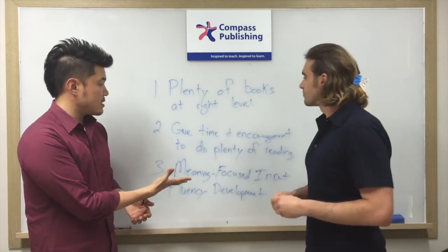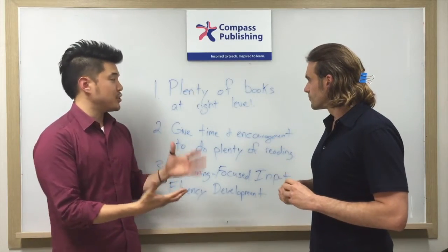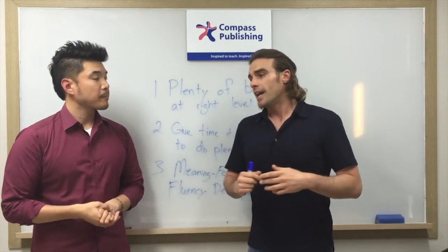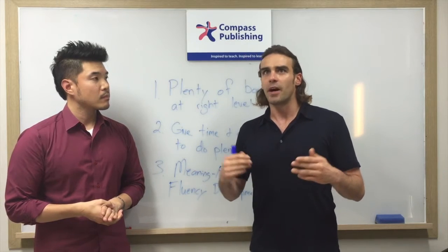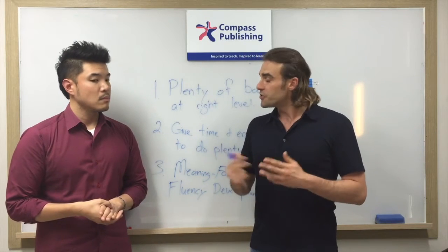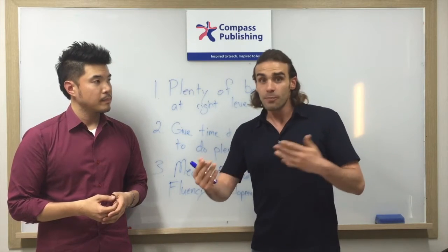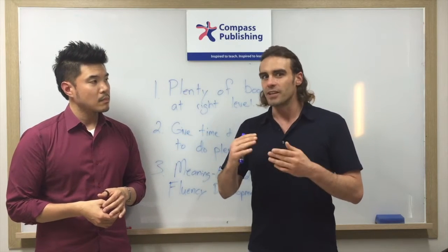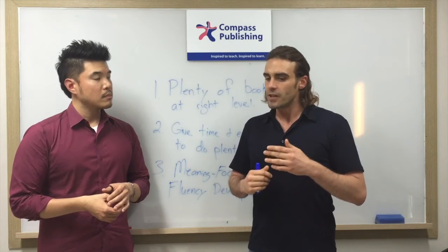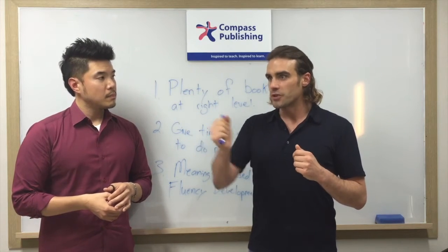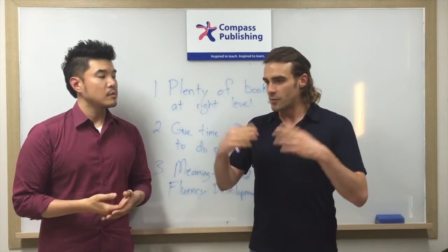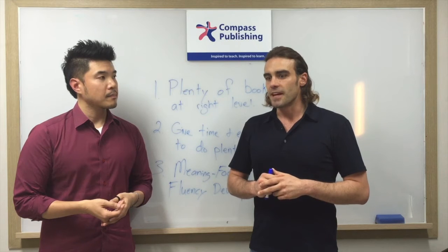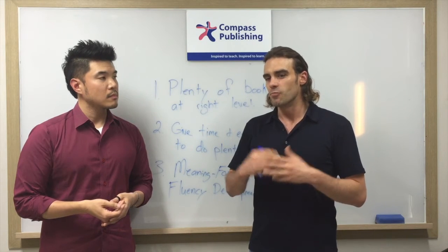These three points sound very clear, but can you give us an example of how a teacher can implement them in class? Sure. Let's say you have a class of 40 students. You want to have about 50 graded readers. That allows students to read at their own pace, turn them in, and check out new books as they finish. You have a surplus of books so students who finish before others have fresh books to check out. Having plenty of books at the right level — fiction, nonfiction, classic — is really the best way to do this in class.